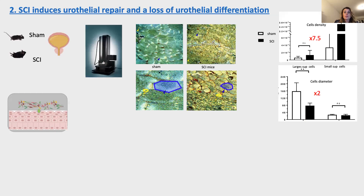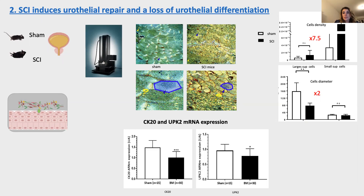Furthermore, major morphological remodeling of the urothelium was observed in the spinal cord injury group as compared to sham mice using FFOCT. The density of small superficial cells was significantly higher, increased by 7.5-fold, and the umbrella cells were significantly smaller, with diameter decreased by 2-fold. These morphological changes were associated with a significant reduction in mRNA expression of differentiation markers of umbrella cells CK20 and UPK2.